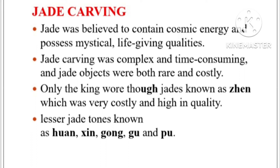Only the king wore the highest jade, known as Zen — a highly precious stone exclusively for royalty. The lower classes were not allowed to wear such costly jade. Lesser jade forms, known as Huan, Xin, Gong, Gu, and Po, were of a lower category and only the nobility were allowed to wear them.